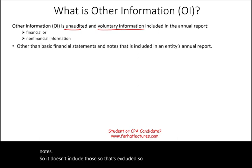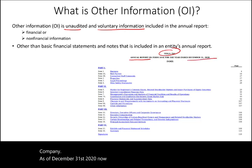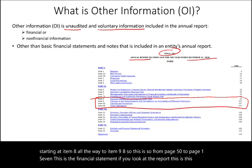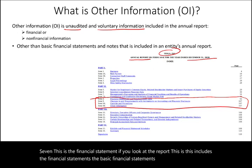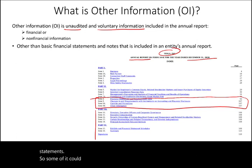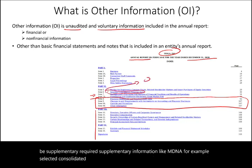Looking at this from a visual perspective — this is the annual report for Tesla Company as of December 31st, 2020. The basic financial statements with the notes start at item 8 all the way to item 9b, from page 50 to page 107. Everything else in the annual report is not part of the basic financial statements. Some of it could be supplementary information, some could be required supplementary information like MD&A. For example, selected consolidated financial statements — this is called other information.